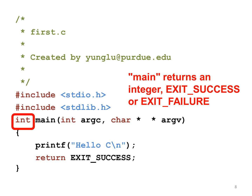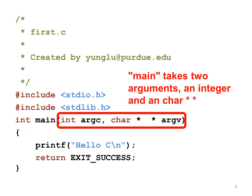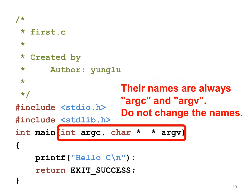The main function takes two arguments. The first is an integer and the second is a character star star. Their names, by convention, are argc and argv. Do not change these names — everyone uses argc and argv. I will explain these arguments in a later lecture.